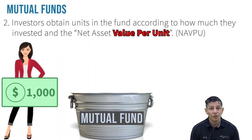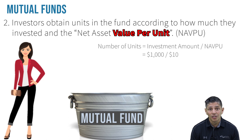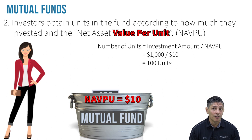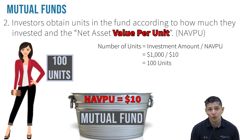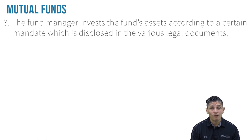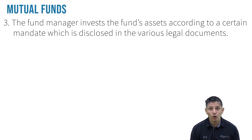For example, if an individual invested $1,000 and at the time the order was processed the net asset value per unit was $10, she would receive 100 units.